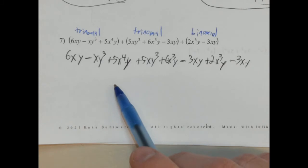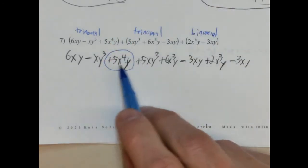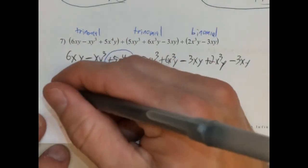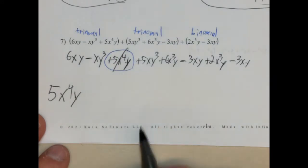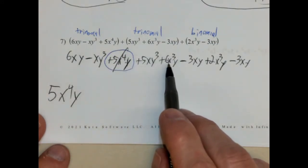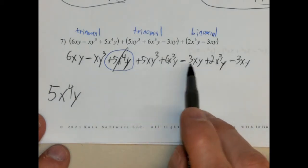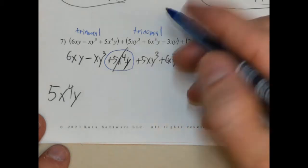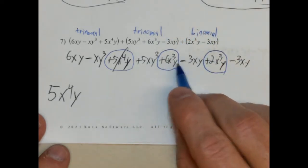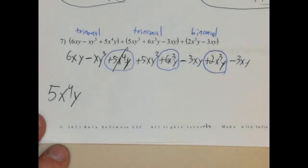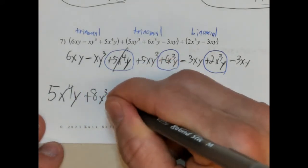So we'll start with whatever term has the highest x — we see a 4 here. So 5x to the 4th y. I don't believe there's any other terms like that, so I'm going to rewrite that down here. So that's gone. Are there any x to the 3rd power? We have x cubed y and x cubed y — those are like terms because they have the same variables and the same exponents. So positive 6 and positive 2: 6 plus 2 is 8. So plus 8x cubed y. Cross those out.